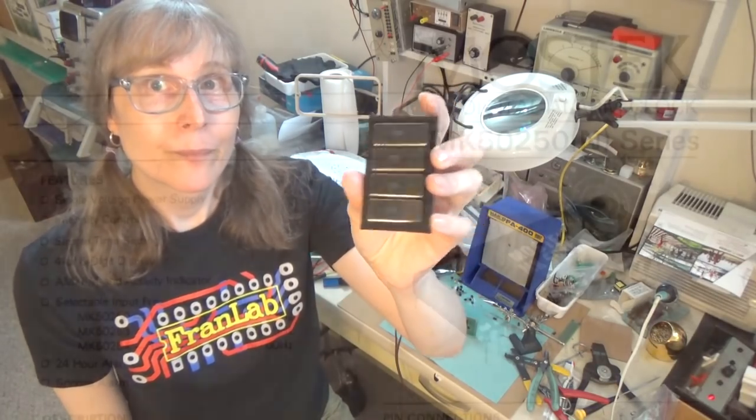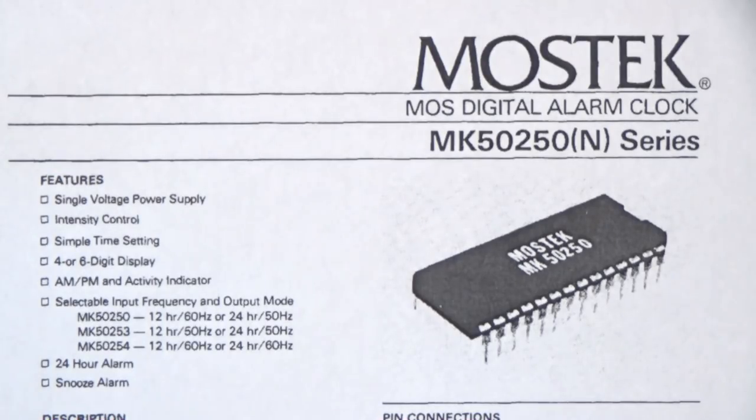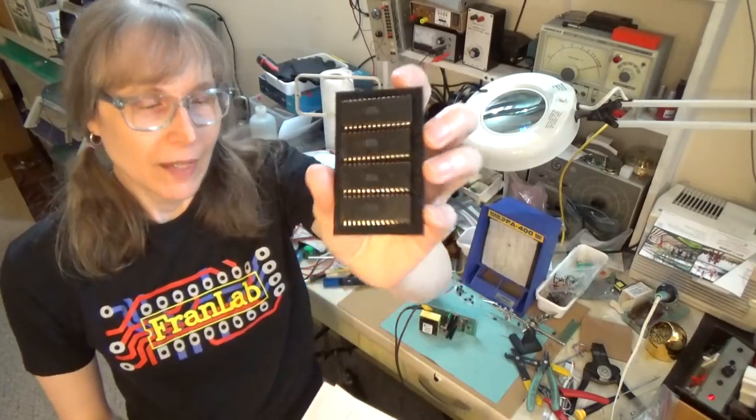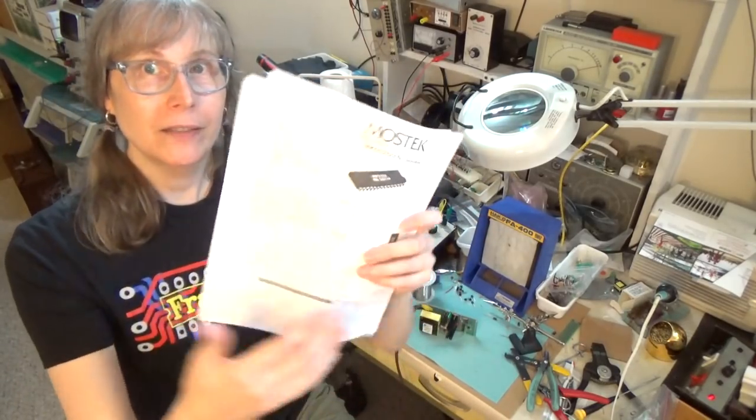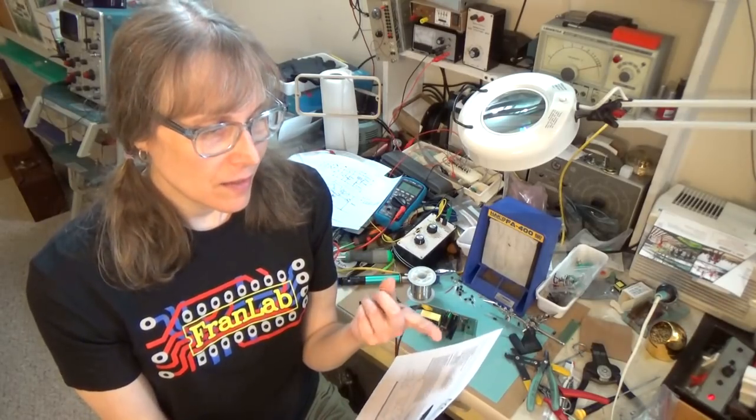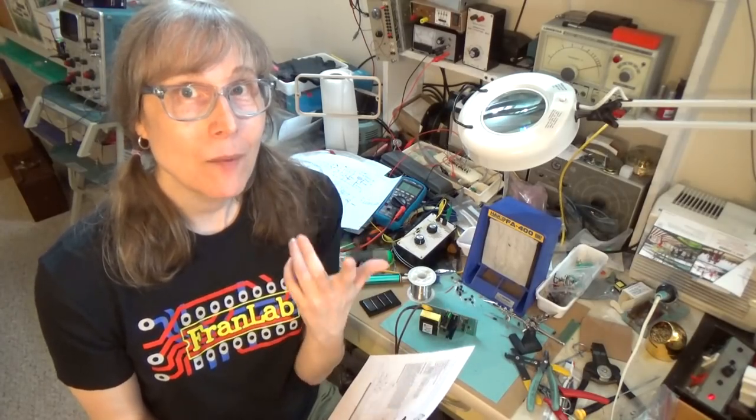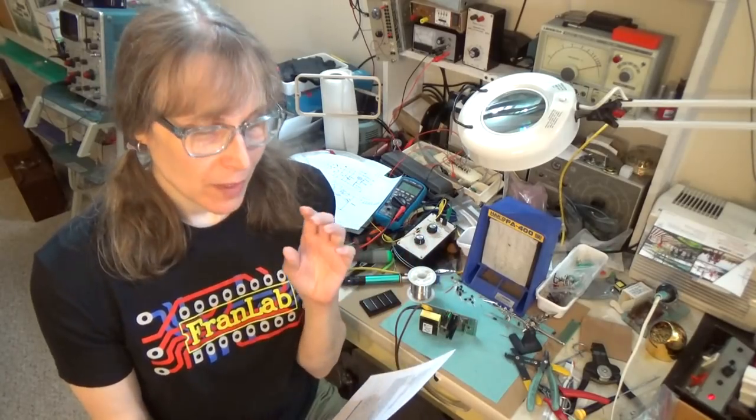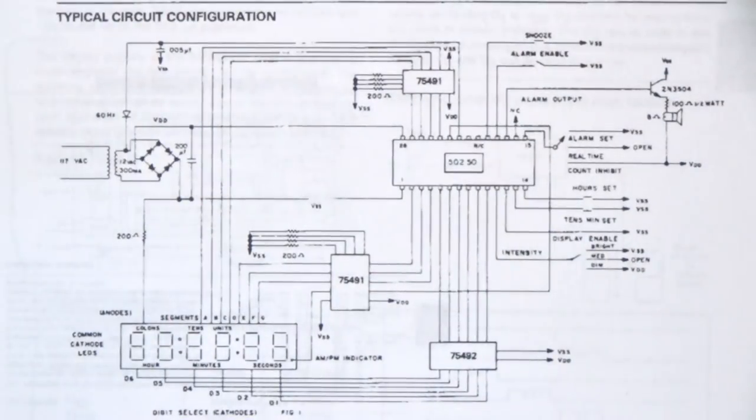This is a Mostek 50250 series clock chip, and got the spec sheets here. In fact, it's so vintage that the MK50250 does not have any buffer output transistors for drivers. When you use this clock chip, you originally would use a set of driver chips which would actually drive multiplexed display. These chips contained transistor arrays that would drive both the anodes and the cathodes of the multiplexed display.